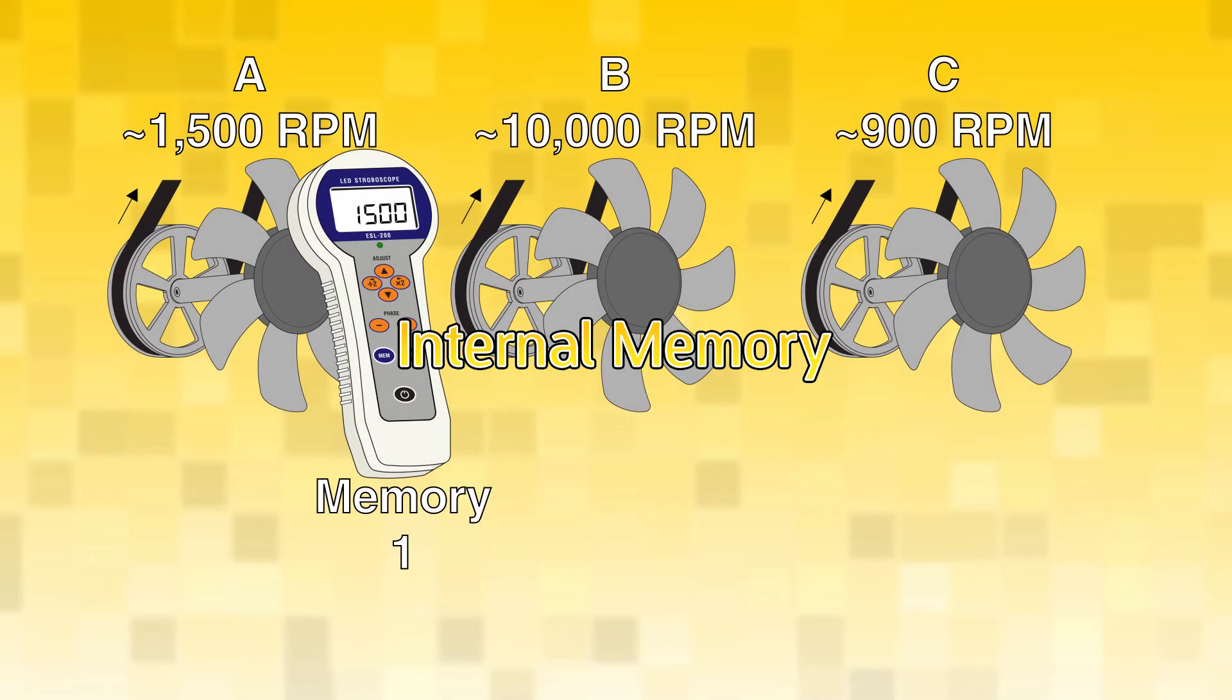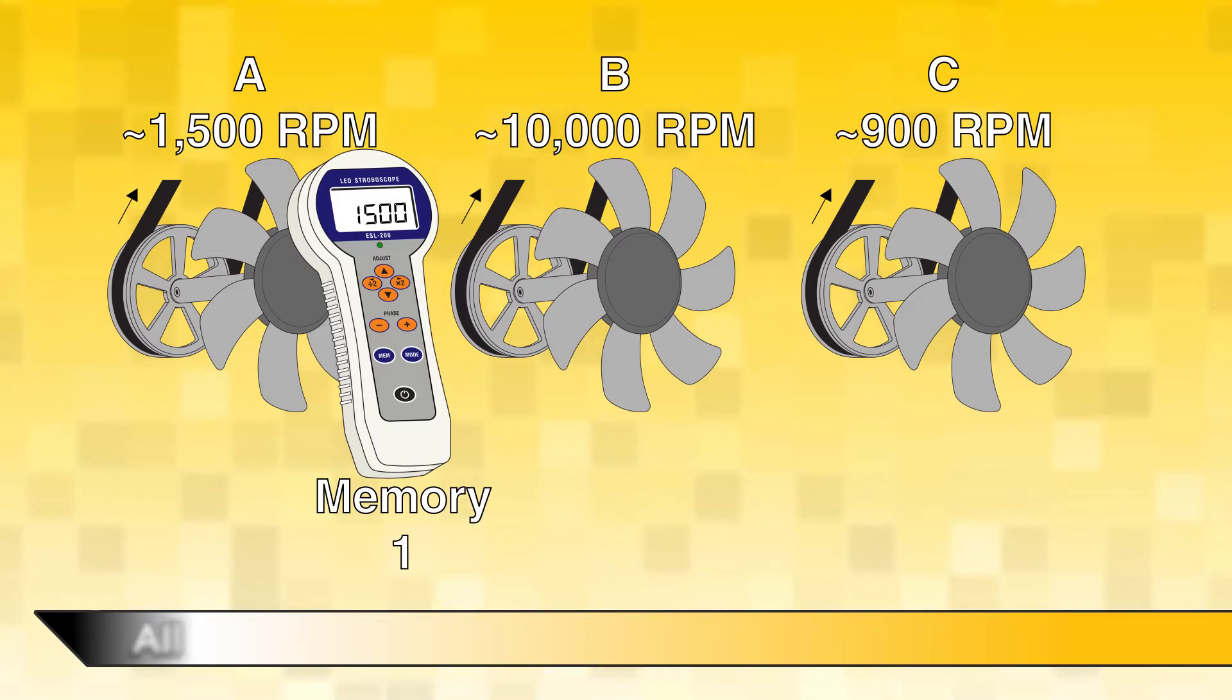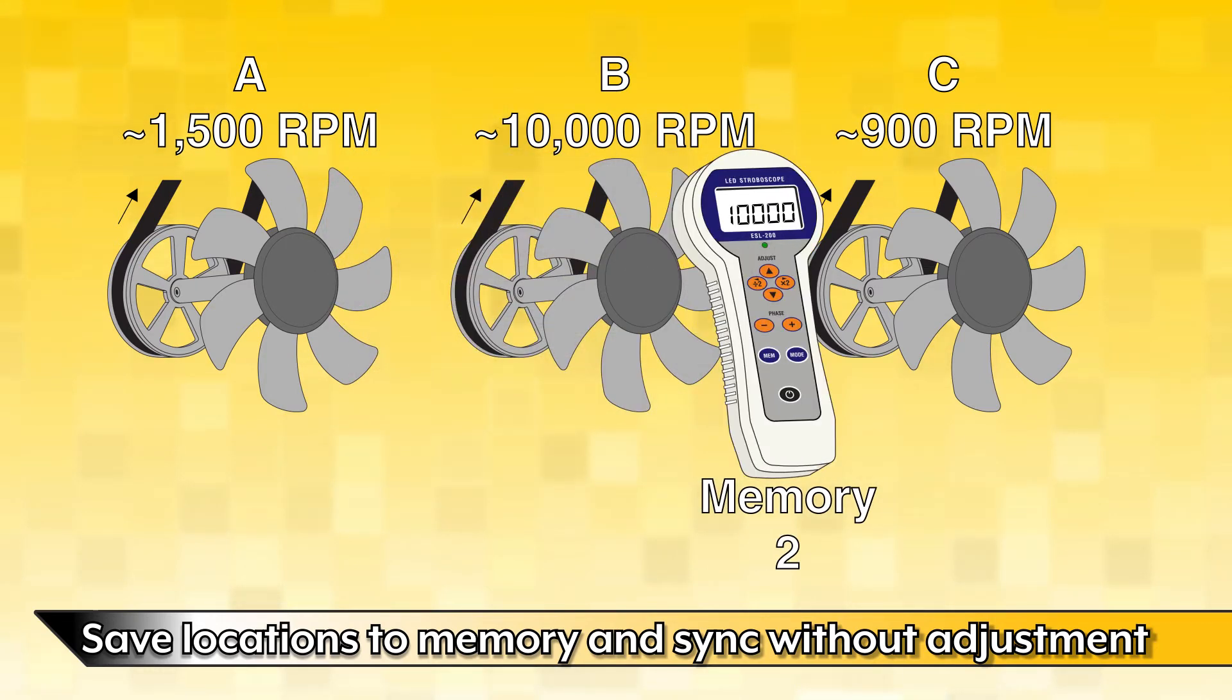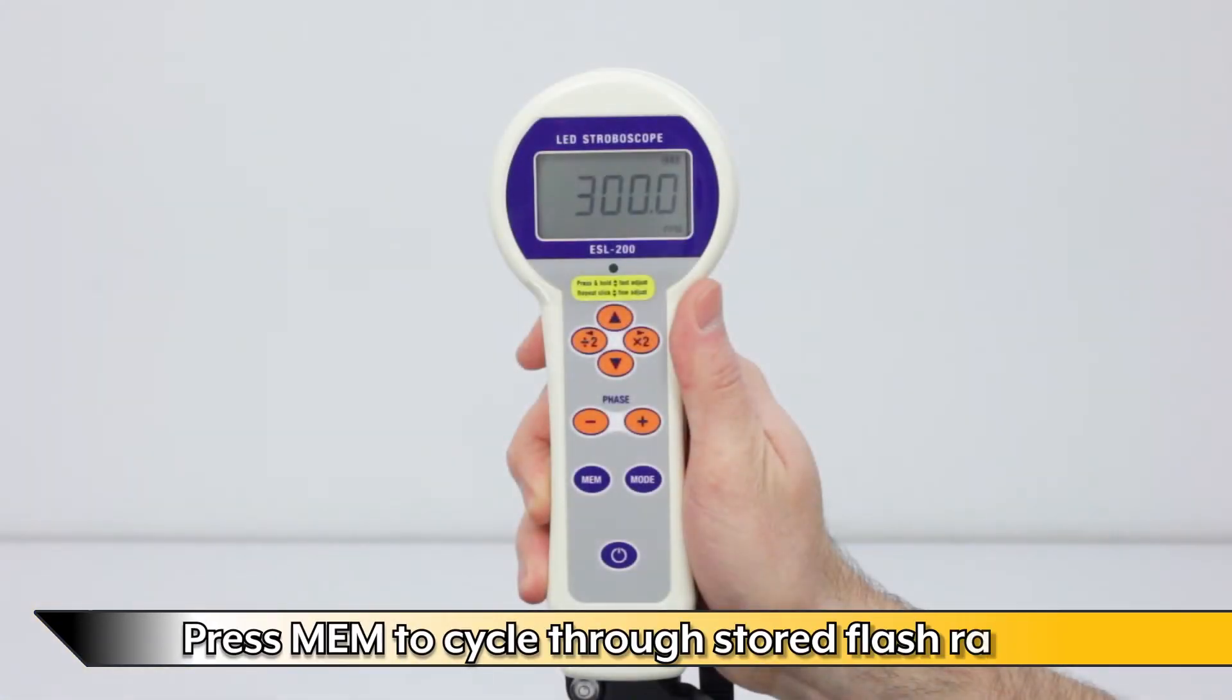The internal memory of the stroboscope allows users to more efficiently check multiple machines across a facility. Save locations to memory entries and quickly synchronize without tedious manual adjustment. Press MEM to cycle through the stored flash rates.